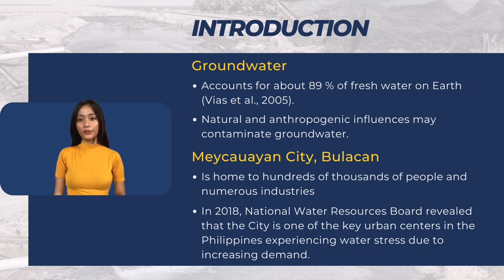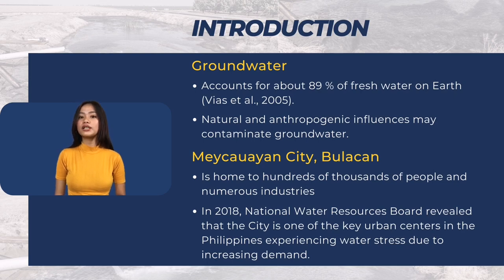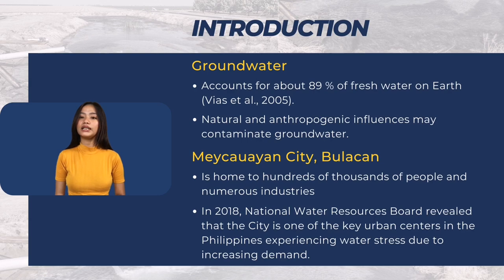Meikawayan is part of the Marilao, Meikawayan, and Ubando River system, or MORS, found in the province of Bulacan, which is known to be a home to hundreds of thousands of people and quite a number of industries, such as gold smelting and recycling of lead-acid batteries. As the city is said to be one of the key urban centers in the country experiencing water stress due to increasing demand, a study from the Institute of the Philippine of Ateneo de Manila University found that the city's groundwater supply is getting depleted.